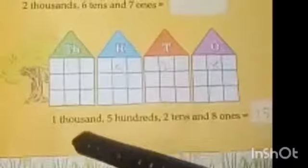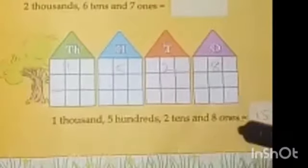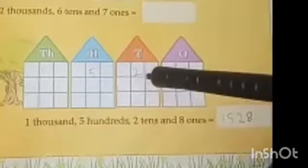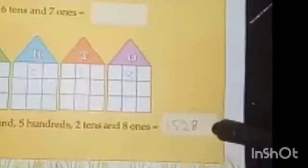Move to the next house: one thousand, five hundreds, two tens, and eight ones. We will write 1 into the thousands house, 5 into the hundreds house, 2 into the tens house, and 8 into the ones house. We will write it like this: 1528.